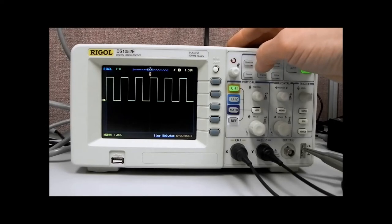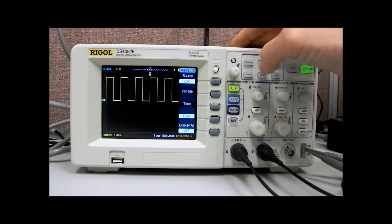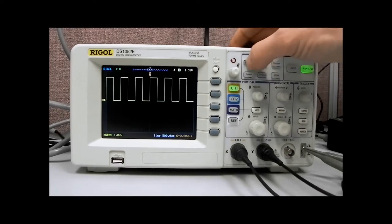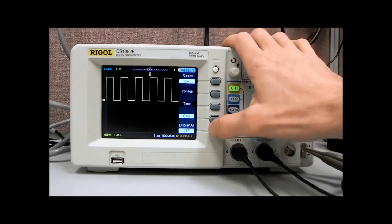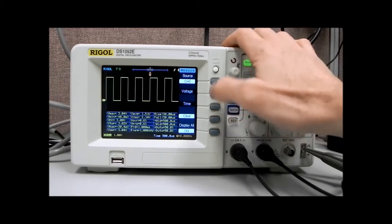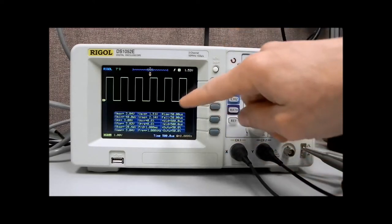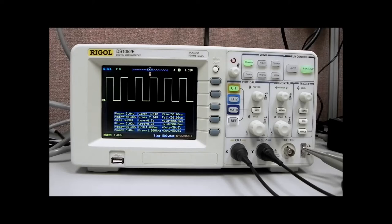We can measure two channels simultaneously, it's just a lot going on on the screen for a demonstration. So we can hit the measure key, and we're going to measure channel 1. Now I can hit display on, and that will bring up all of the measurements that I have enabled on that particular channel.